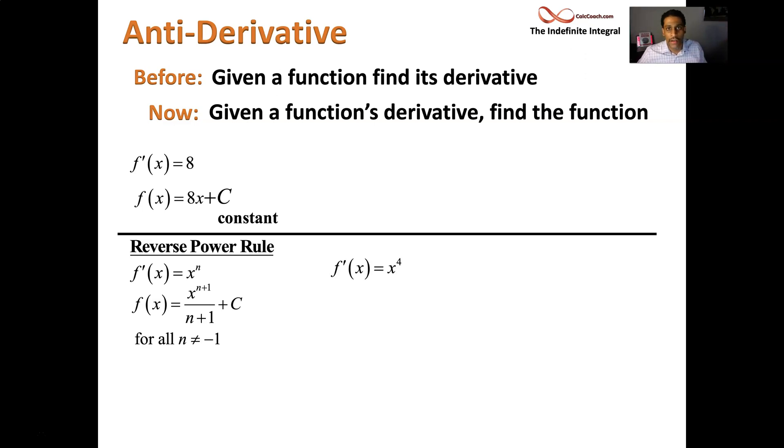So here's an example. What function has as its derivative x to the 4th? Well, according to this rule, it has to be x to the 5th over 5. So what we're doing is the power rule, but we're doing it in reverse. This over 5 part, the over n plus 1 part, is to cancel what would come down from the power rule. Okay. Plus a c, of course.